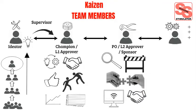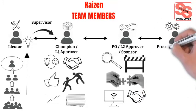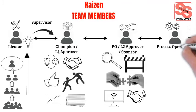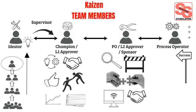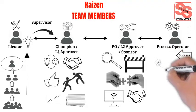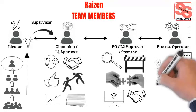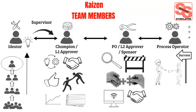The last role, and a very crucial one, is the process operators. These team members are crucial to the success of the Kaizen event. The process operator is a person or a team who helps to work on your recommendation based on your expectation.